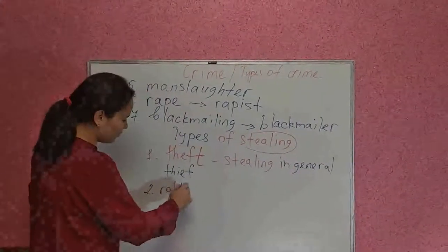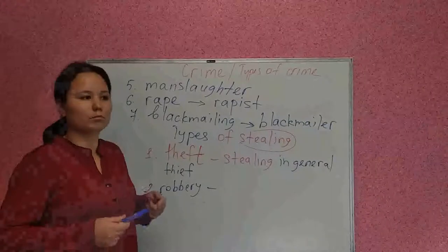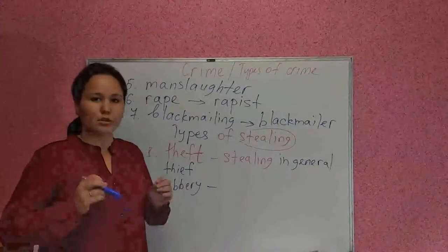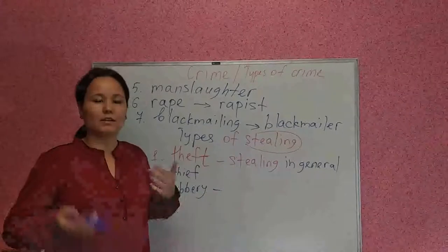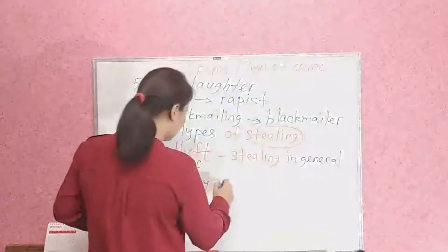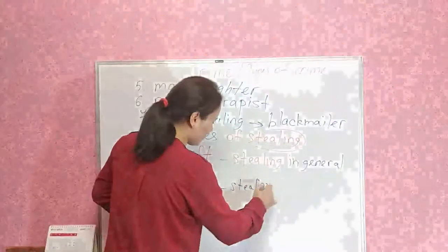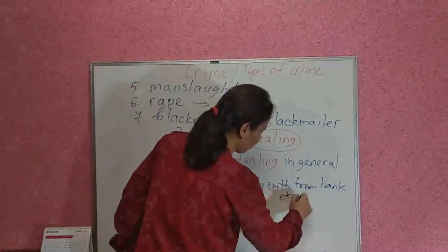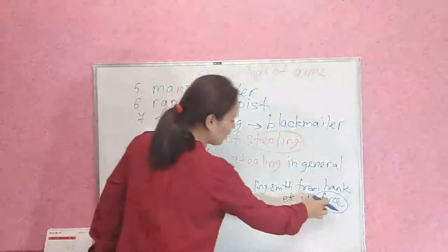Number two is robbery. Robbery is stealing something from some building — some bank, from a shop — usually with force and violence. Force and violence are the keywords here. Robbery is stealing something, usually money, from a bank or shop or department stores, with force and violence. The criminal who commits robbery is called a robber.